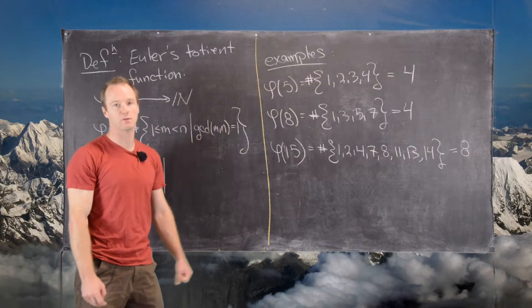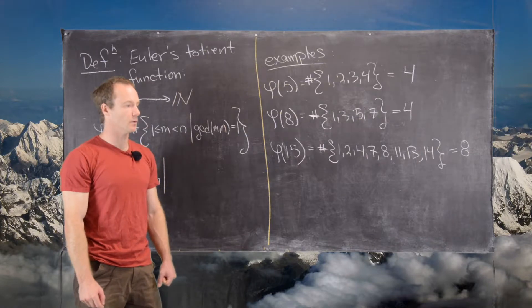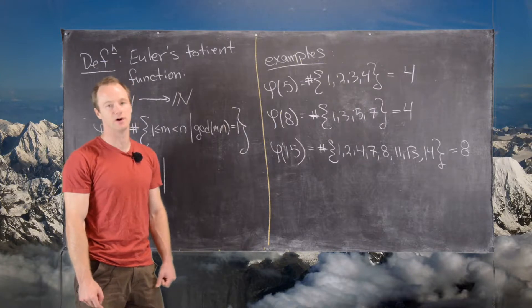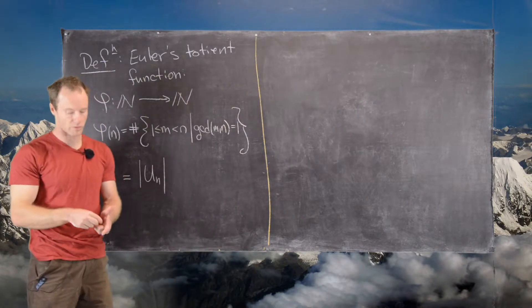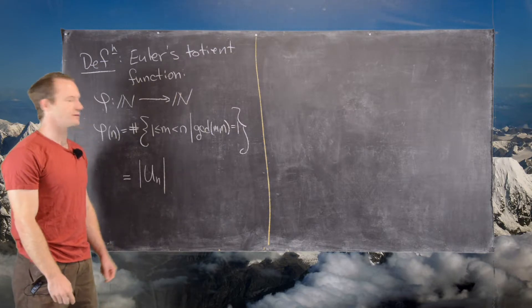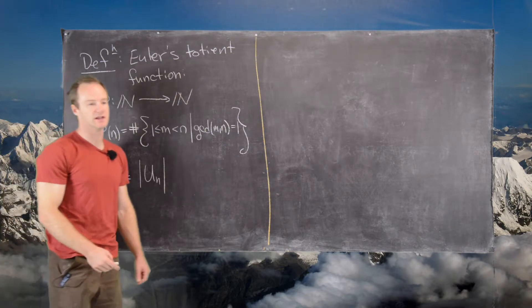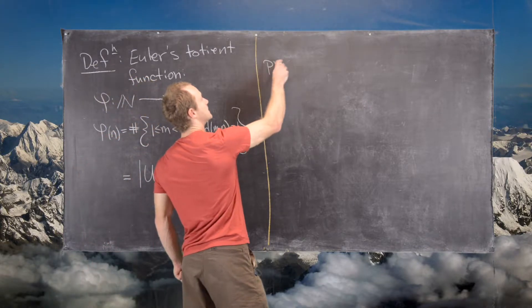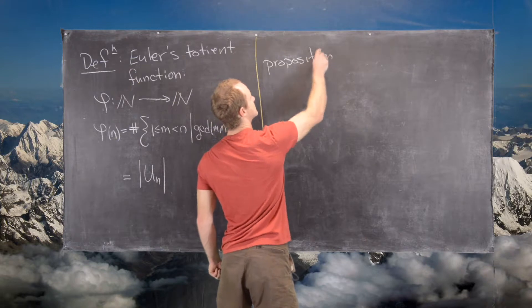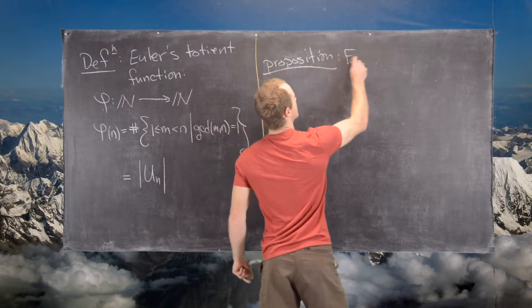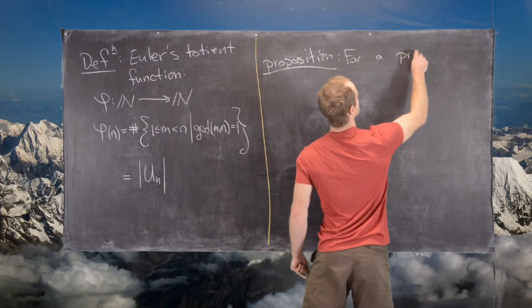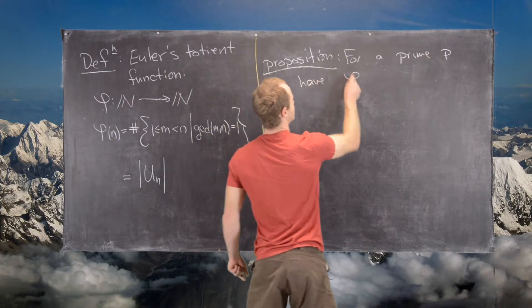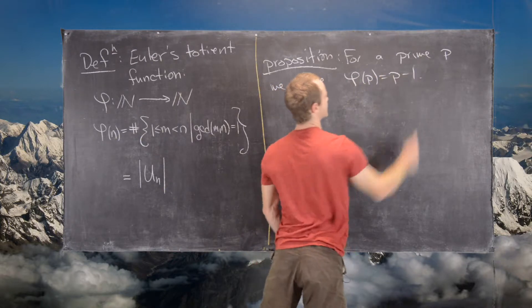Okay, great. So I'll clean up the board, and then we'll prove a formula for the value of phi of a prime. Now that we've defined Euler's totient function and we've looked at some examples, let's prove the first simple result regarding Euler's totient function. So we have this following proposition. For a prime P, we have phi of P equals P minus 1.